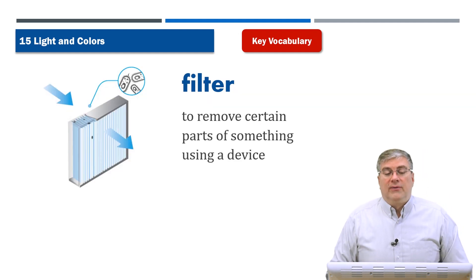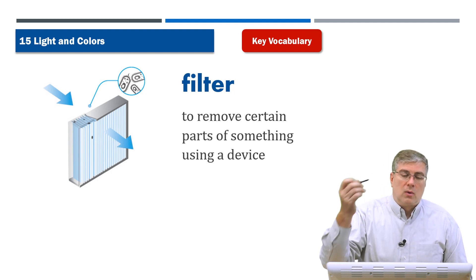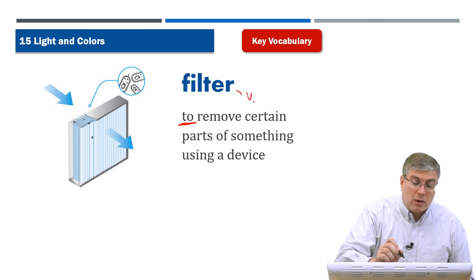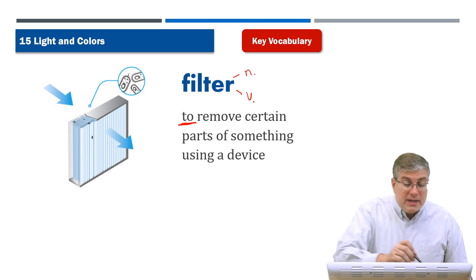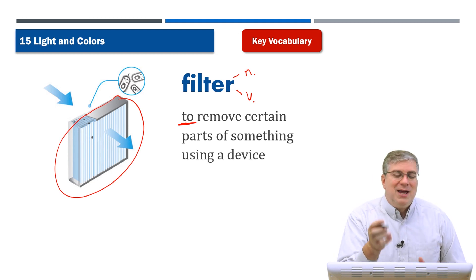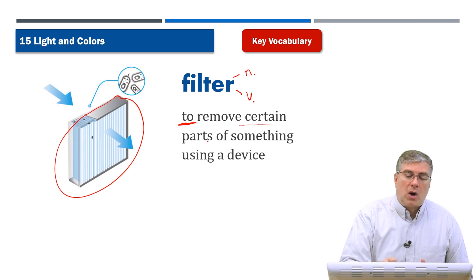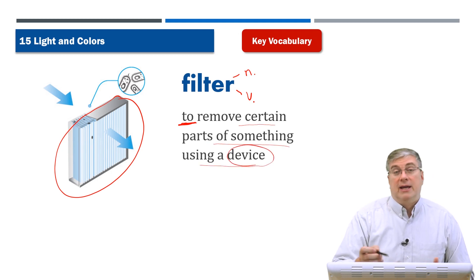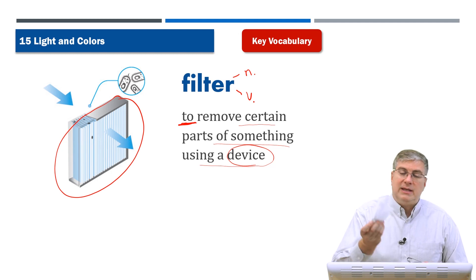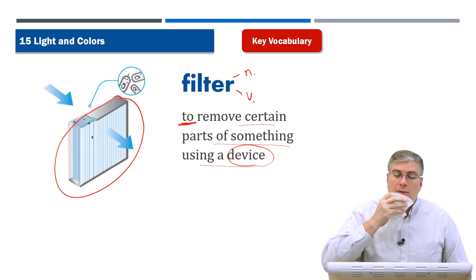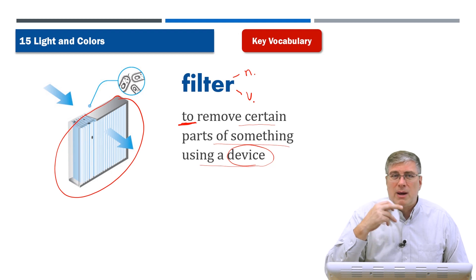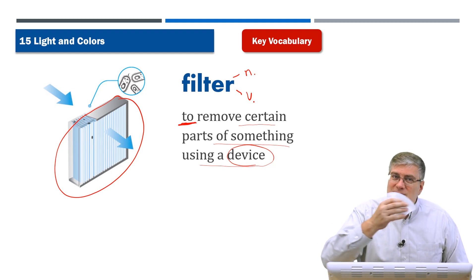Next we have 'filter.' Filter can be a noun or a verb — here it's used as a verb. A filter removes certain parts of something using a device. We have many different filters in our everyday life. Maybe you're wearing a mask these days — a mask is a filter because it removes certain things, like your spit or a virus coming from your mouth or nose, and prevents it from going into the air.